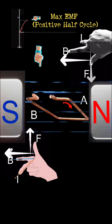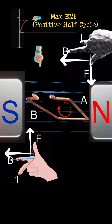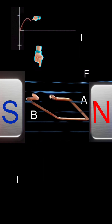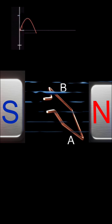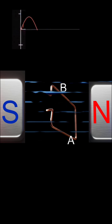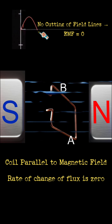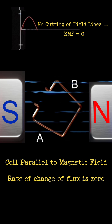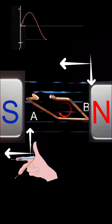By applying Fleming's right-hand rule with the field from north to south and motion downwards on A, the induced current flows from A to B through the loop. This represents the positive half cycle. When the coil becomes parallel to the field, it cuts no magnetic lines, and the induced EMF becomes zero.